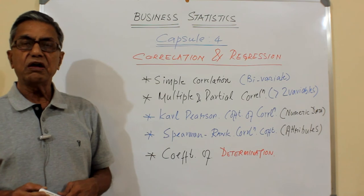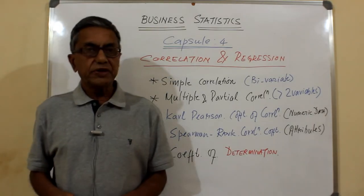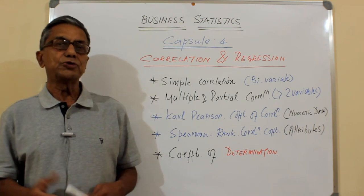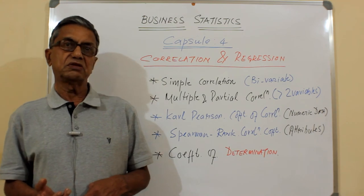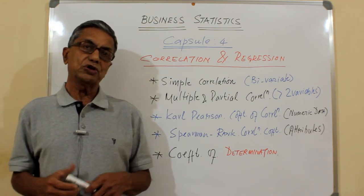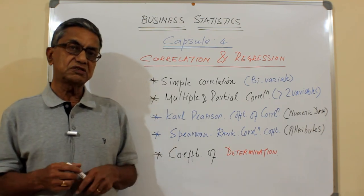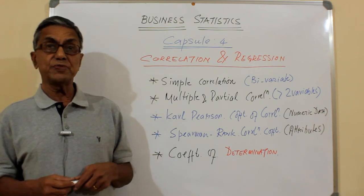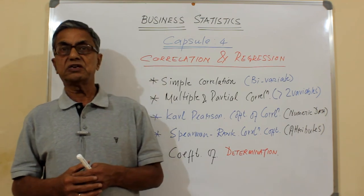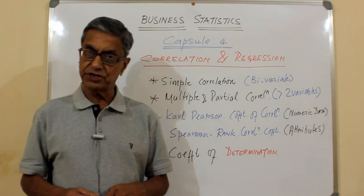When you have numeric data, you can use certain methods, one of which is called Pearson's coefficient of correlation. We can also calculate correlation coefficients for attributes. In business situations we come across attributes such as work environment, cleanliness, weather conditions, performance, and ergonomics — and judgments passed by judges in competitions or criminal cases. These are ranked on a scale and correlation is calculated using the Spearman rank correlation method.